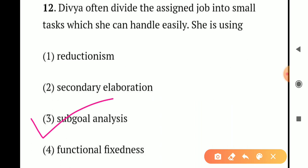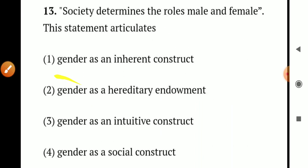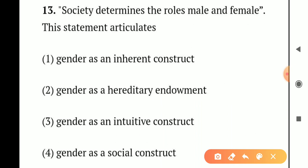Question number 13. Society determines the rules for male and female. This statement articulates: Option 1 - gender as an inherent construct. Option 2 - gender as a hereditary environment. Option 3 - gender as an intuitive construct. Option 4 - gender as a social construct. When society determines male and female rules, this articulates gender as a social construct. So the correct answer is Option 4 - gender as a social construct.